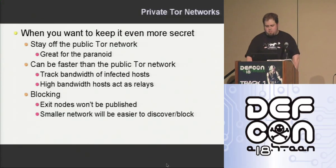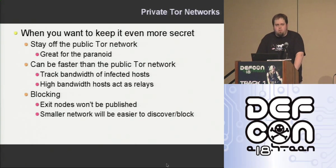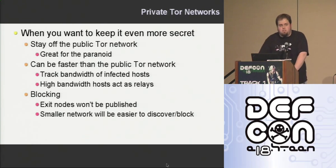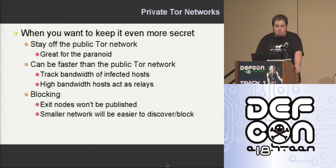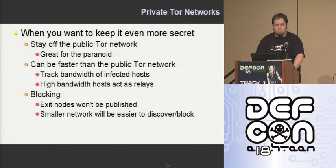One thing I didn't want to get into too much but is still worth mentioning is private Tor networks. Setting up a private Tor network is pretty neat — it's a bit of an involved process right now, having to set up your own directory authority and a whole lot of other stuff. But it's great if you're really paranoid and want to stay off the public Tor network. The nice thing is it can actually be significantly faster than the public Tor network. You can track the hosts you're infecting, check their bandwidth, maybe run some speed tests, find out how good a connection is, and say: you have a high amount of bandwidth, you're going to be one of my relays. And blocking a private network will be significantly harder — there's no list of exit nodes that will be published, and nothing that people will know unless they actually go and investigate the network themselves.